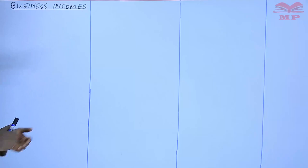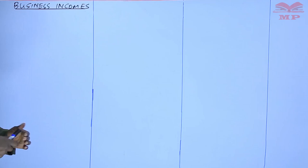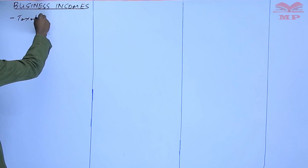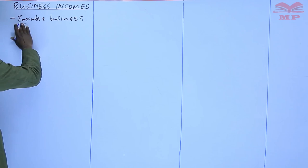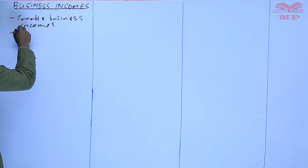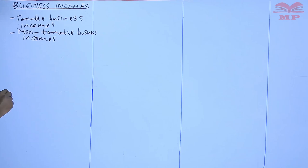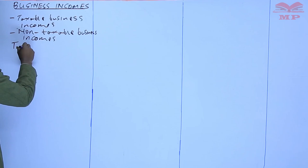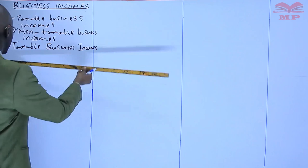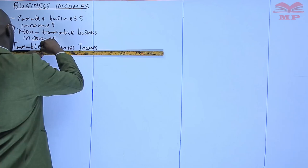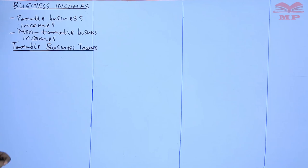We start with business incomes. As mentioned, we need to differentiate between two categories: one, the taxable business incomes, and two, the non-taxable business incomes. We will start with the first one — the taxable business incomes. Now, we ask ourselves: what are these taxable incomes?